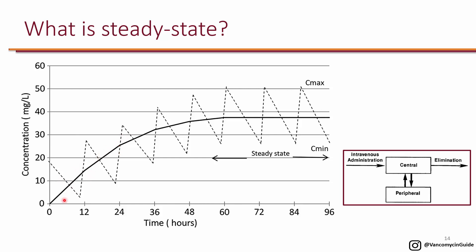On the other hand, before reaching steady state there will be subtherapeutic levels of vancomycin. So we don't really want to decide our maintenance dose based on levels in the period before steady state, because if you decide the maintenance dose there, once the drug gets to steady state you're going to be overdosing vancomycin. So you want to get the levels during steady state.